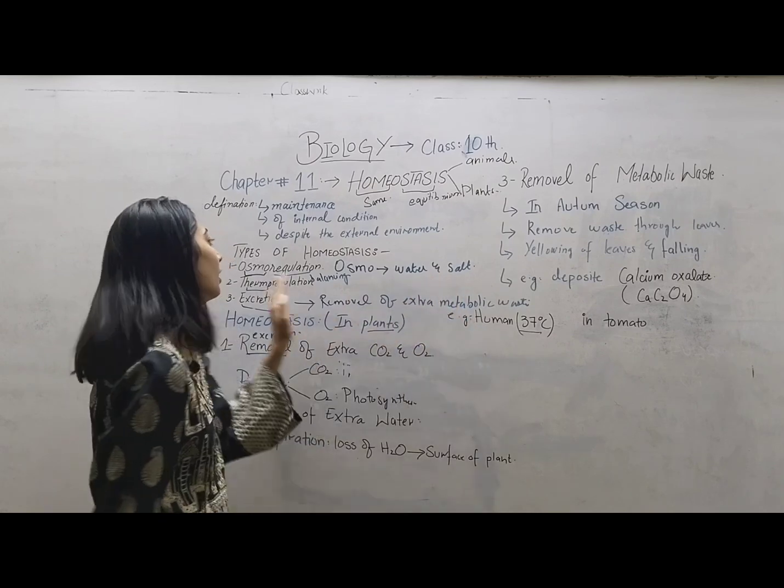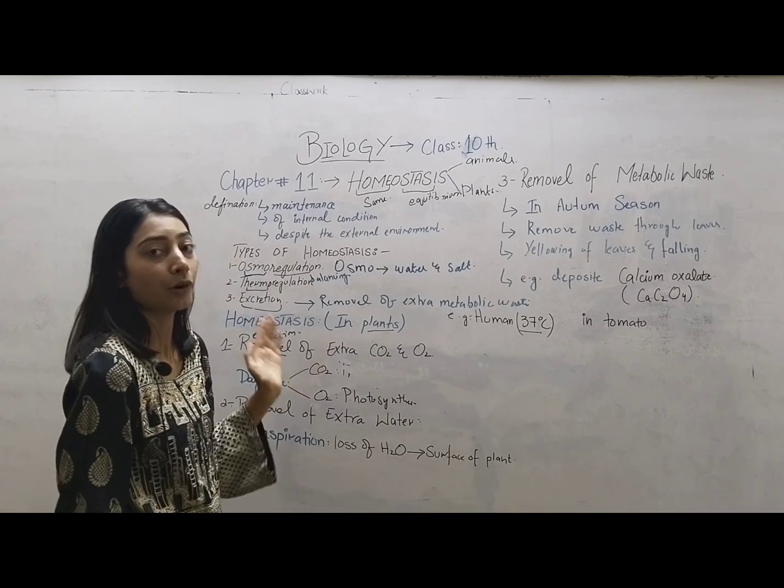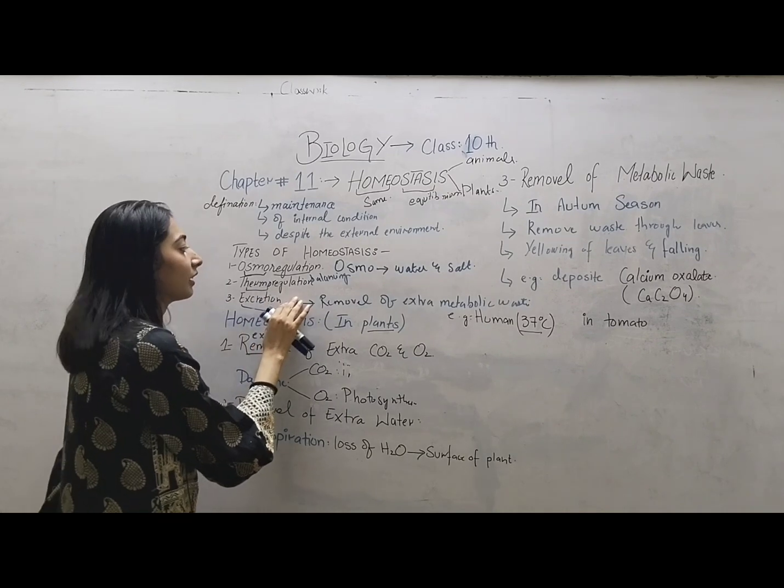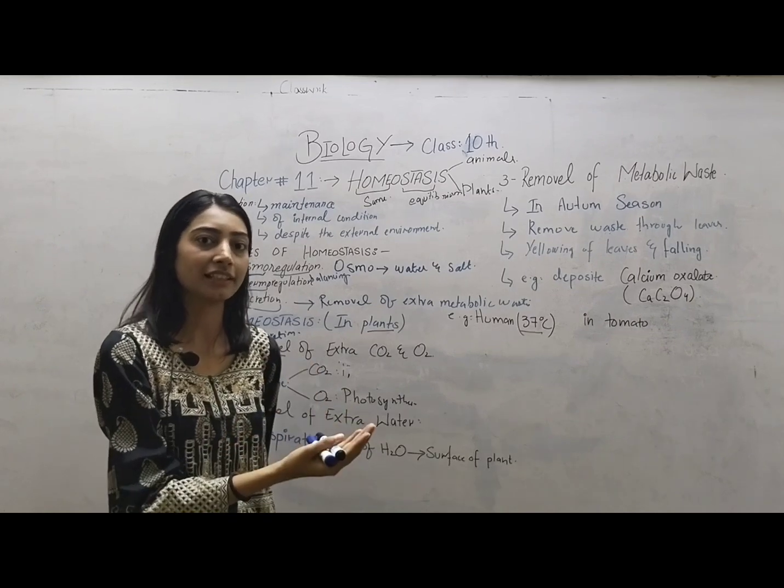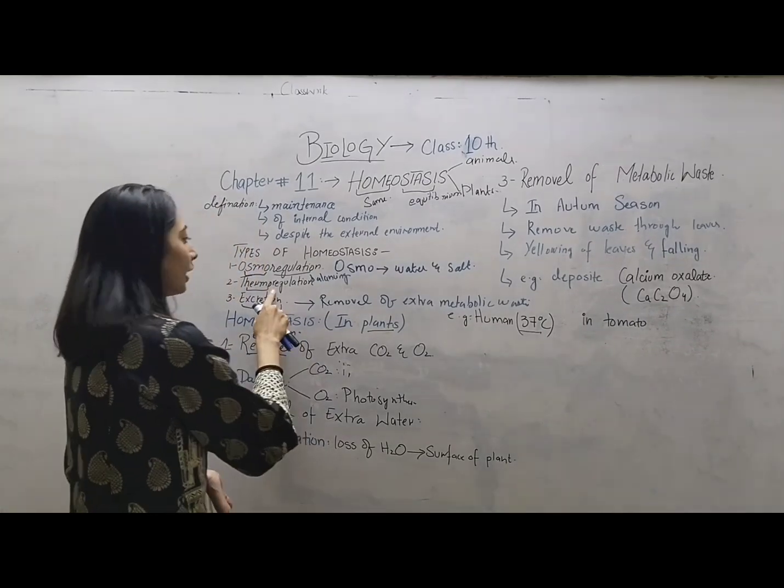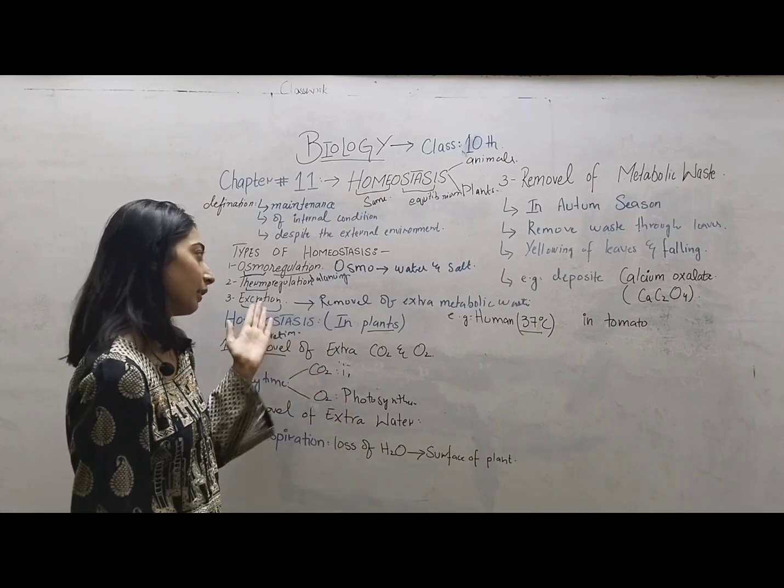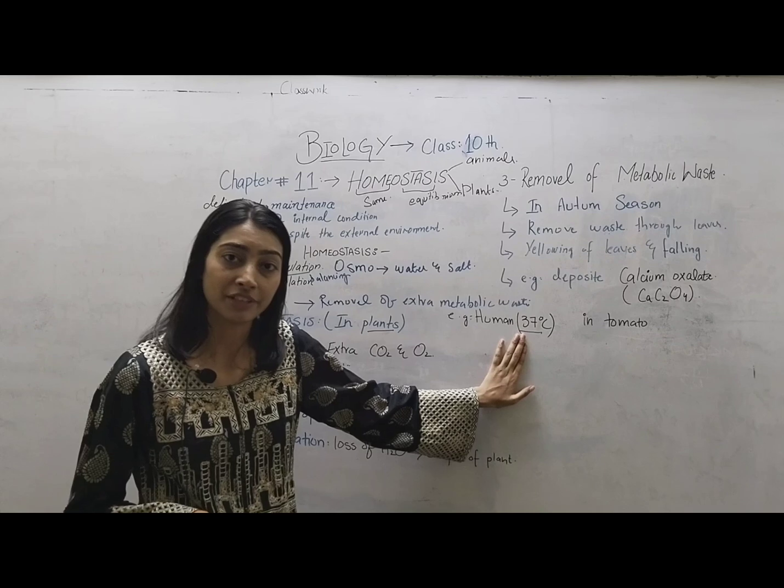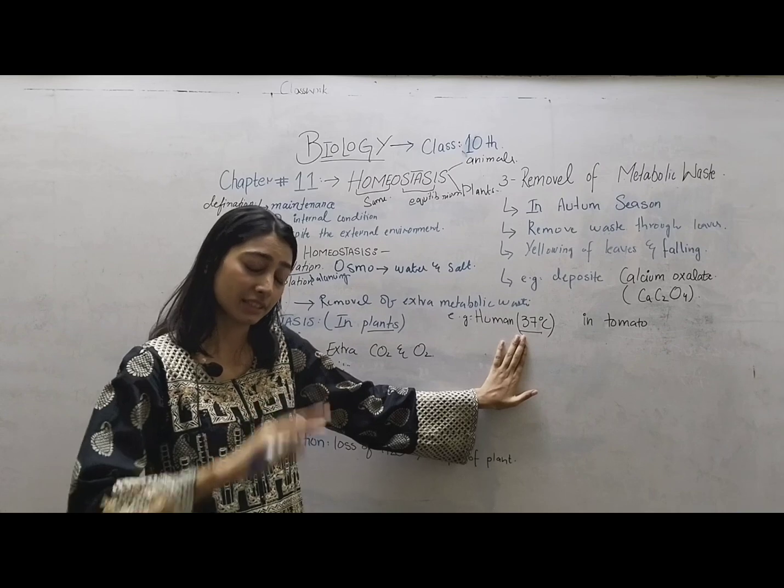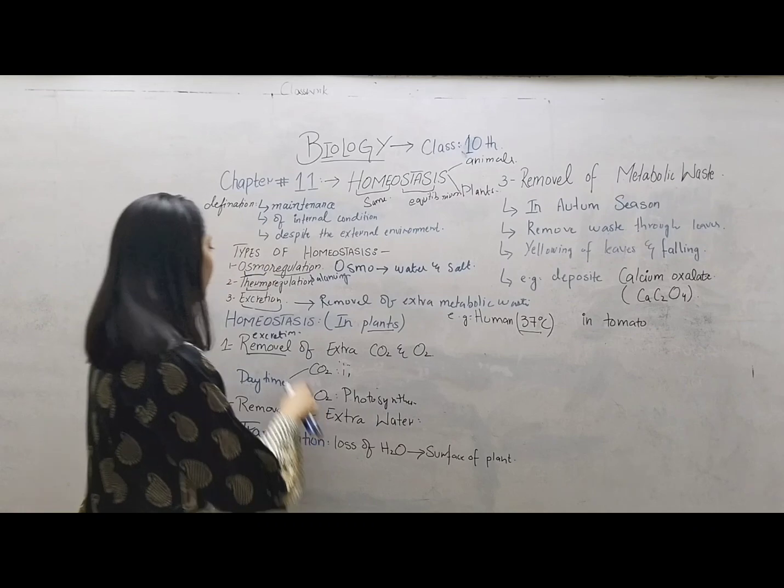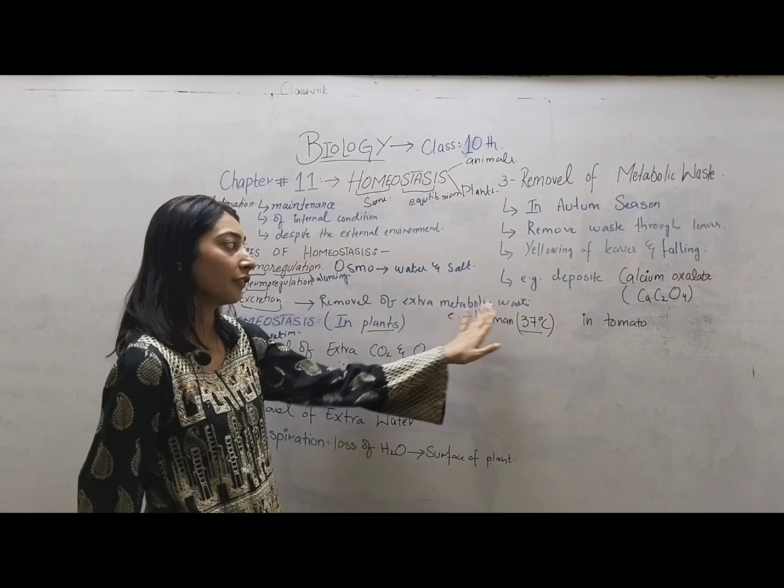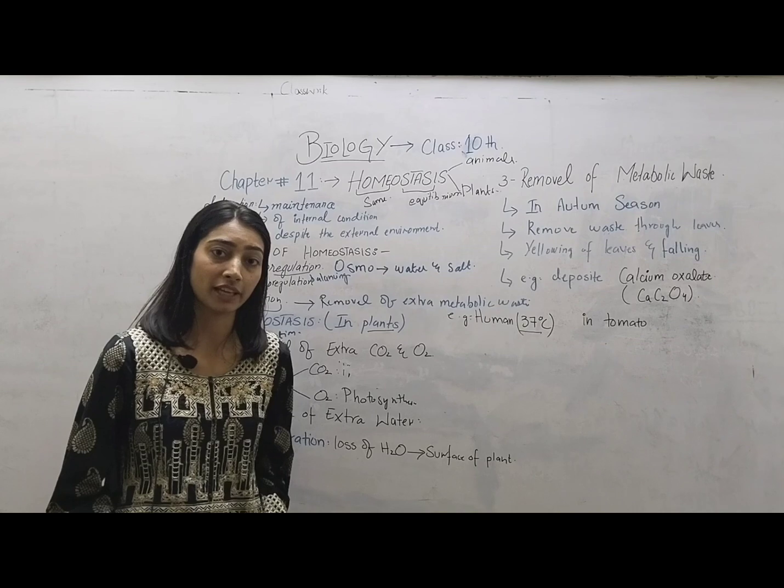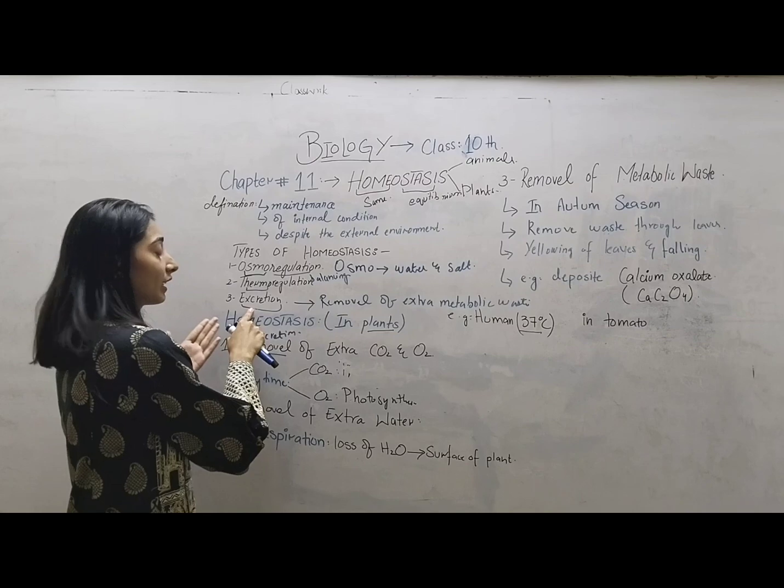Next is thermoregulation. Thermoregulation means maintaining internal body temperature. As we know, human body temperature remains constant even when the external temperature changes. The internal temperature is maintained through thermoregulation. Another type is excretion, which is the removal of waste from the body.